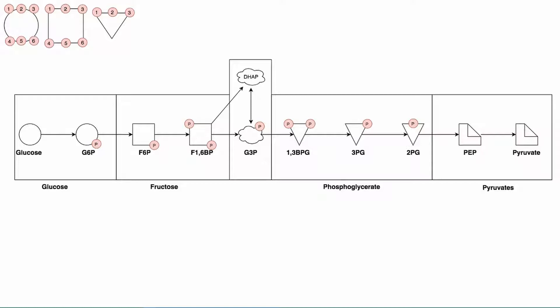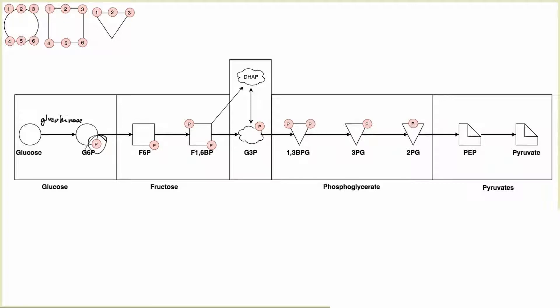To start, the first thing we have in glycolysis is glucose, and the first thing we do with glucose is add a phosphate group to the sixth position. To do this we use a kinase — an enzyme that adds a phosphate group to a substrate. In this case it's glucokinase: 'gluco' meaning glucose, and 'kinase' meaning adding a phosphate group to glucose. Or we have hexokinase.